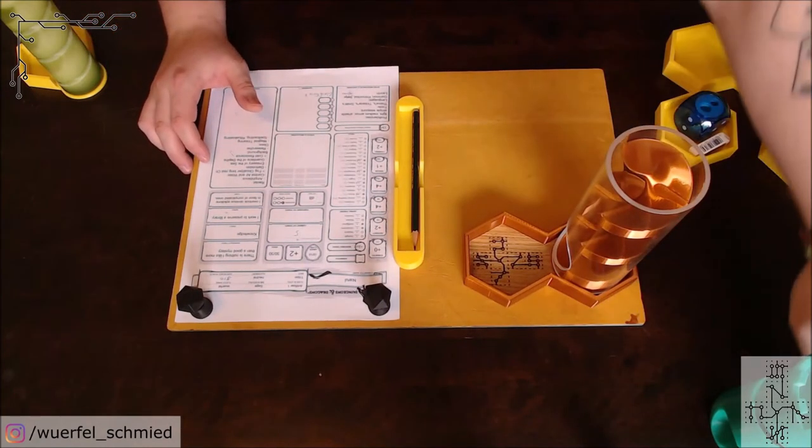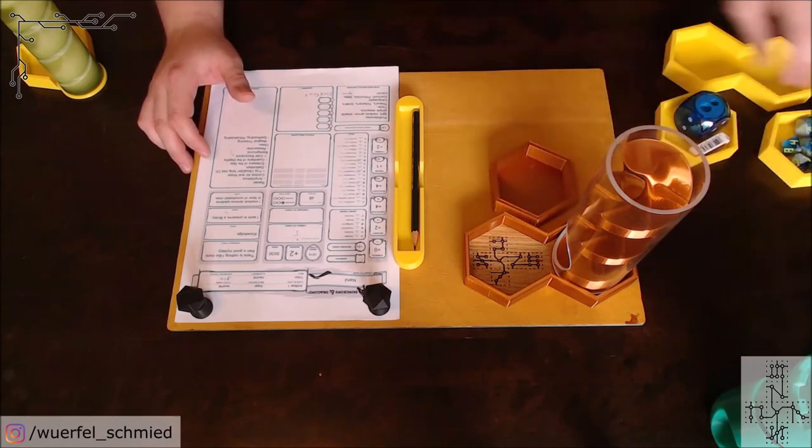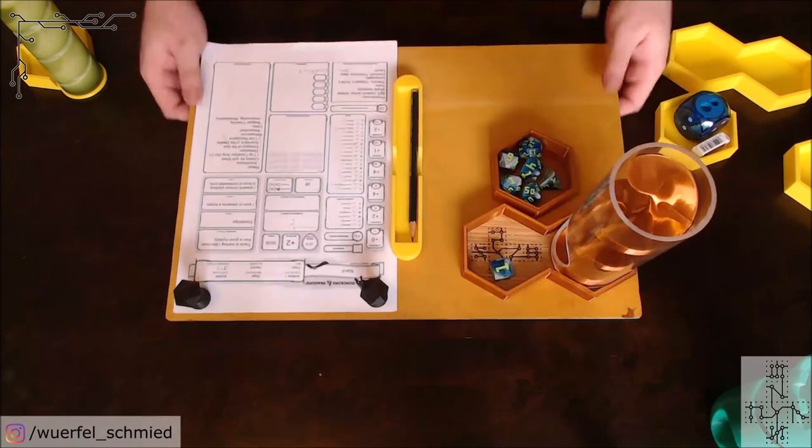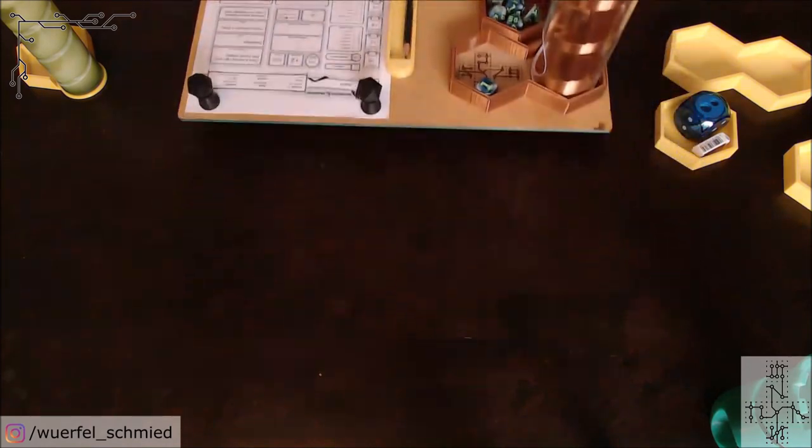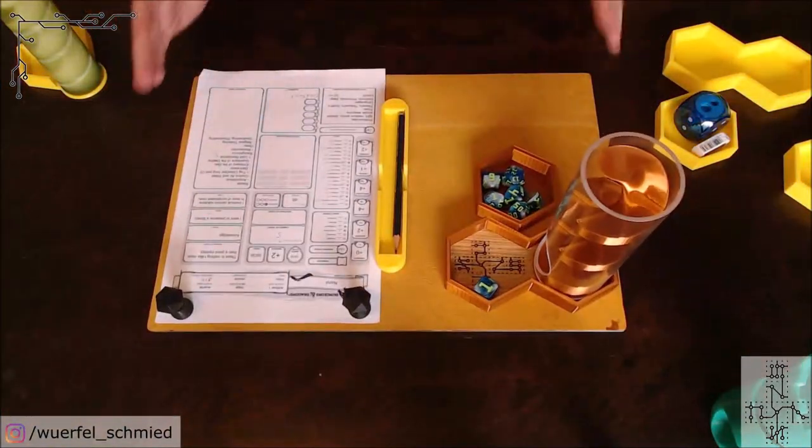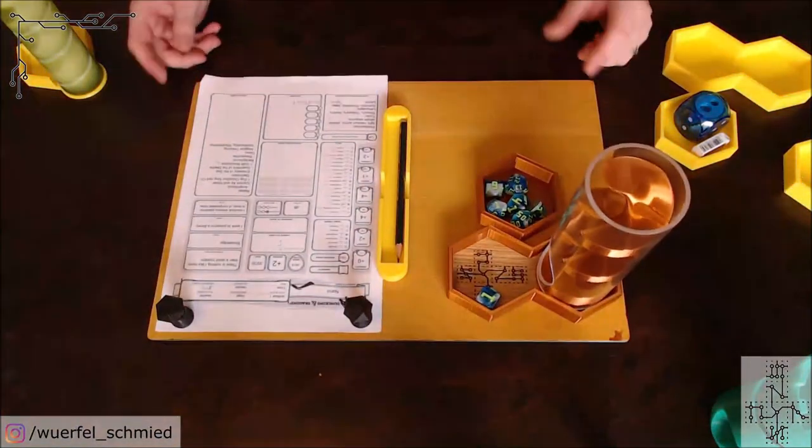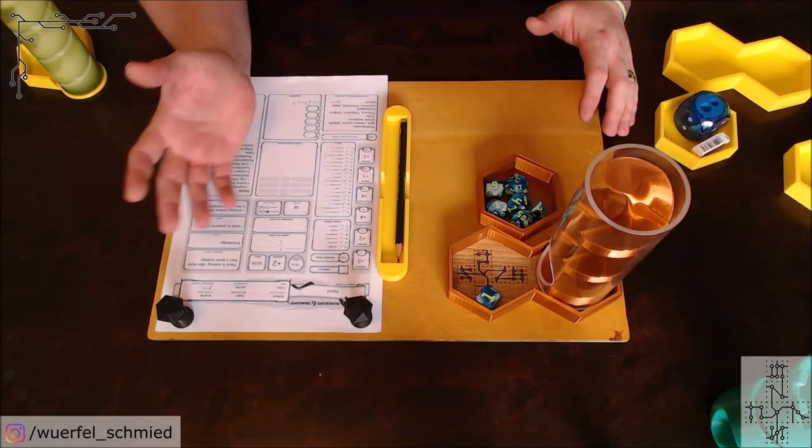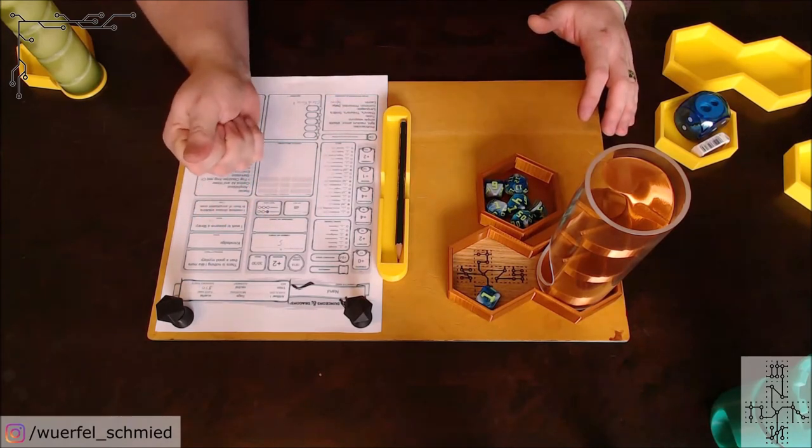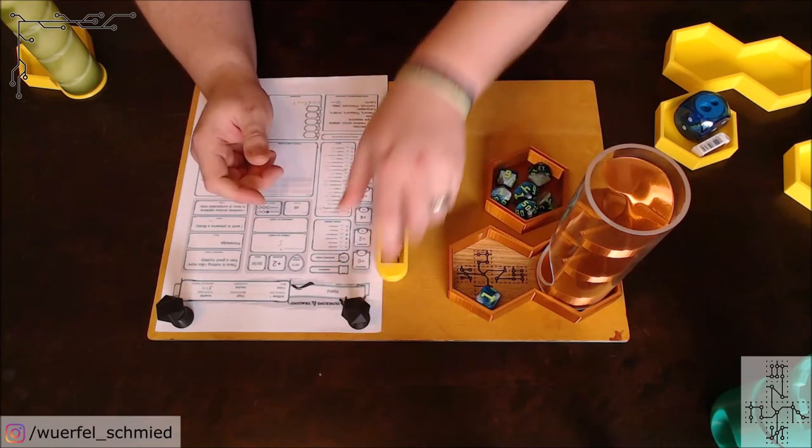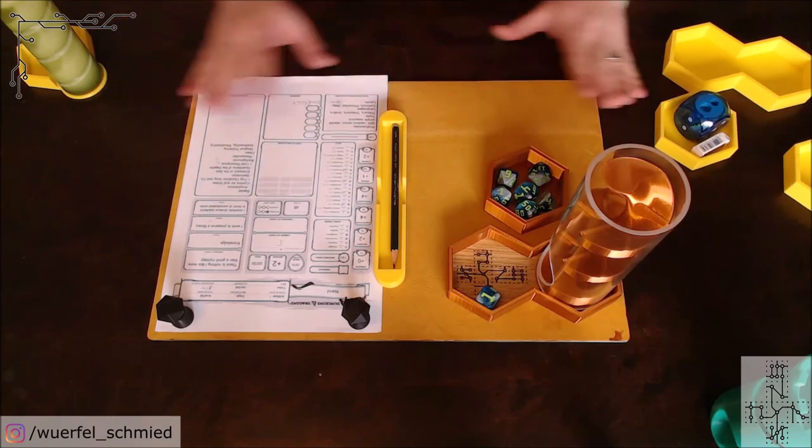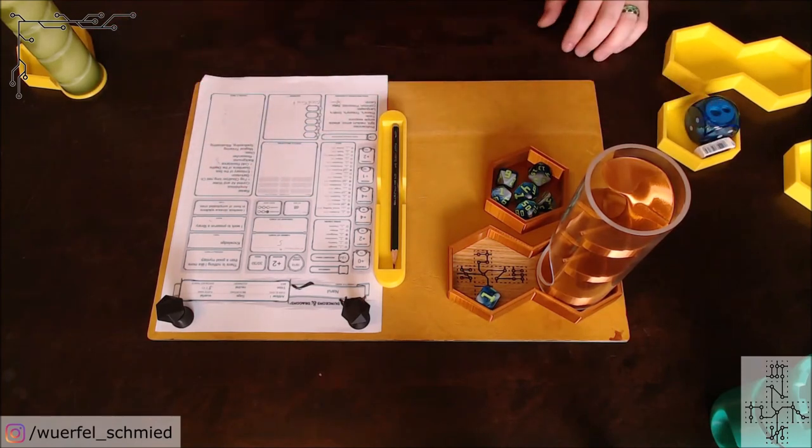And I think with something like this, it's fairly easy to have all your stuff together at reach. And when the pizza comes in or if you want to build up the dungeon or whatever is happening on the table, you can just move it aside without the fear of forgetting something. Also, if your DM gives you some notes or item cards or all that stuff, you can use the trays, the magnets, whatever you like to pin it down. So, you won't lose anything and you can organize everything the way you like.